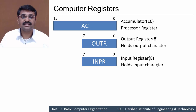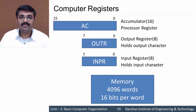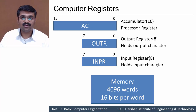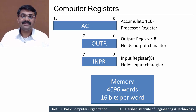The data from INPR would then be transferred to the corresponding register or memory. Next, we have the memory — an important unit without which our computer cannot work. In our basic computer design, the memory size we are considering is 4096 words, and each word is of 16 bits. So the memory size is 4096 × 16 bits.